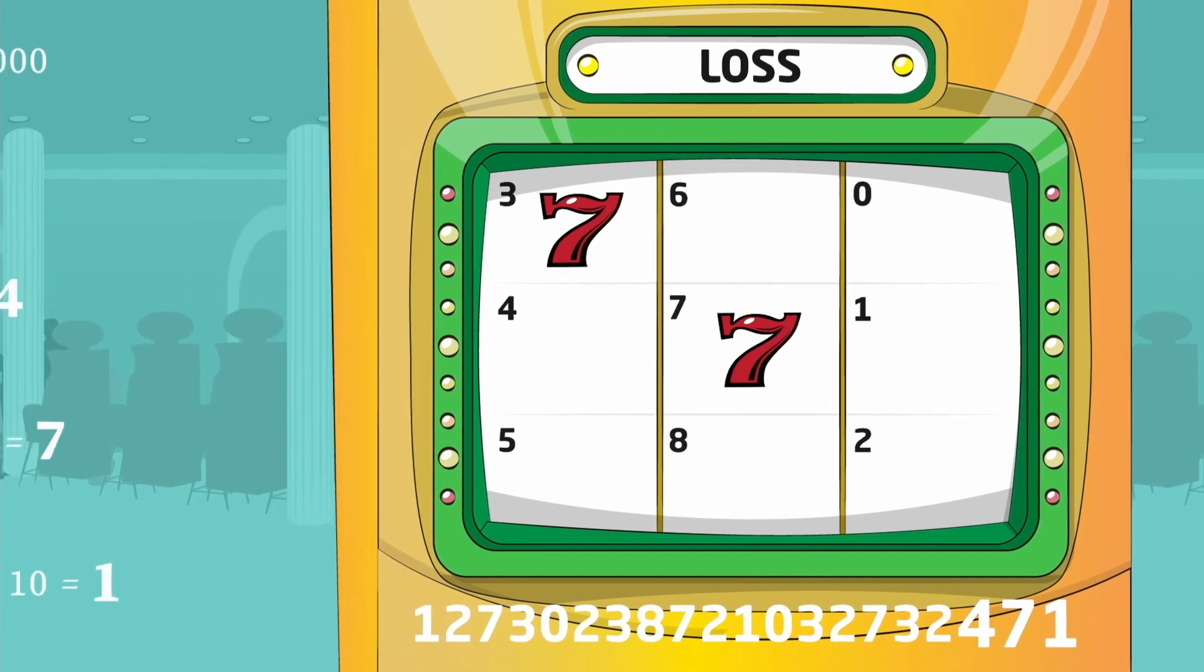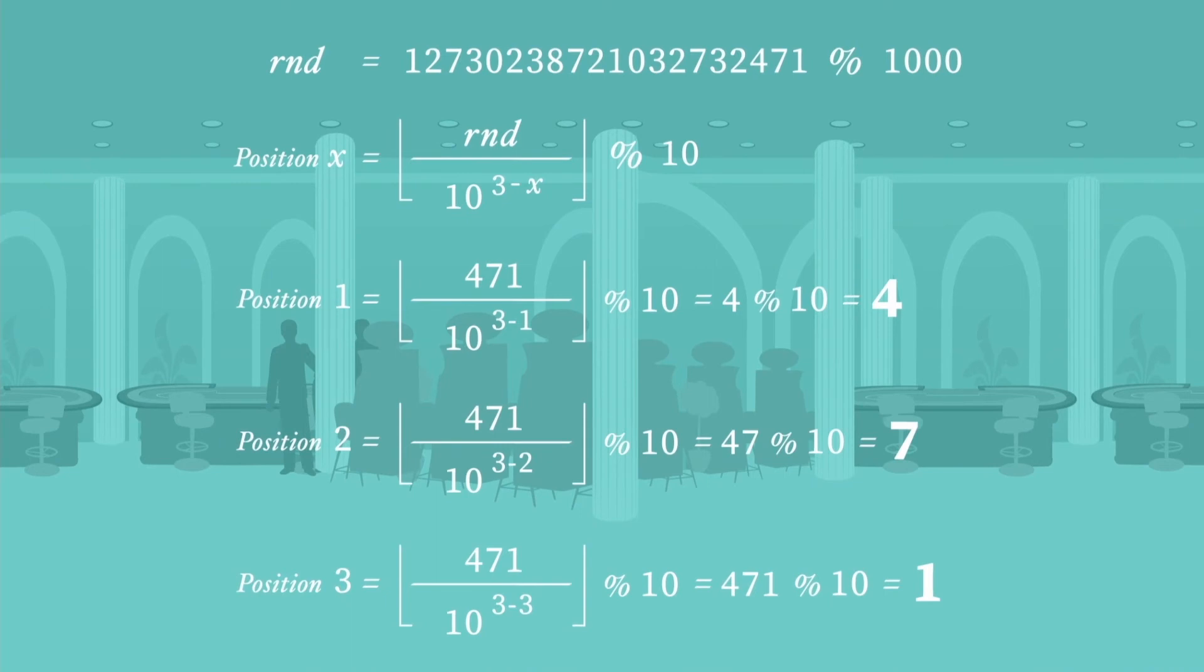The example slot has 10 symbols on each reel on purpose, so that only three digits are needed to determine the result. Pause the video now to take a closer look at the underlying game mathematics.